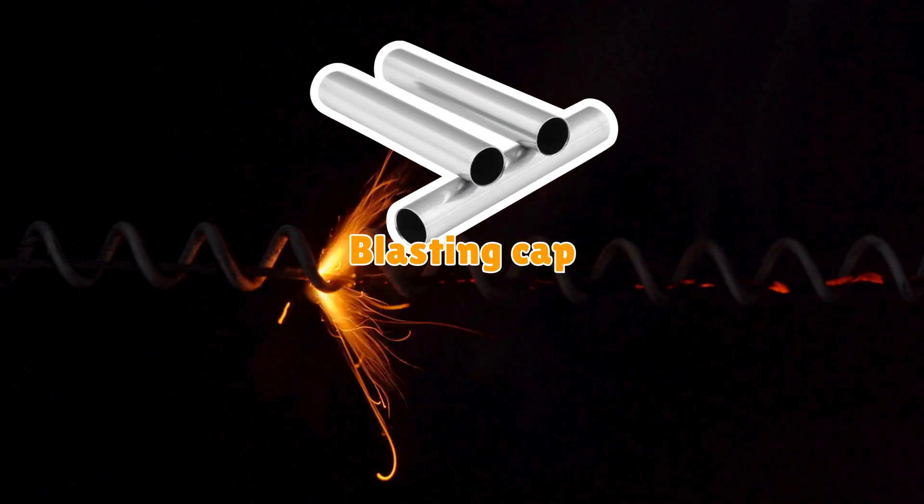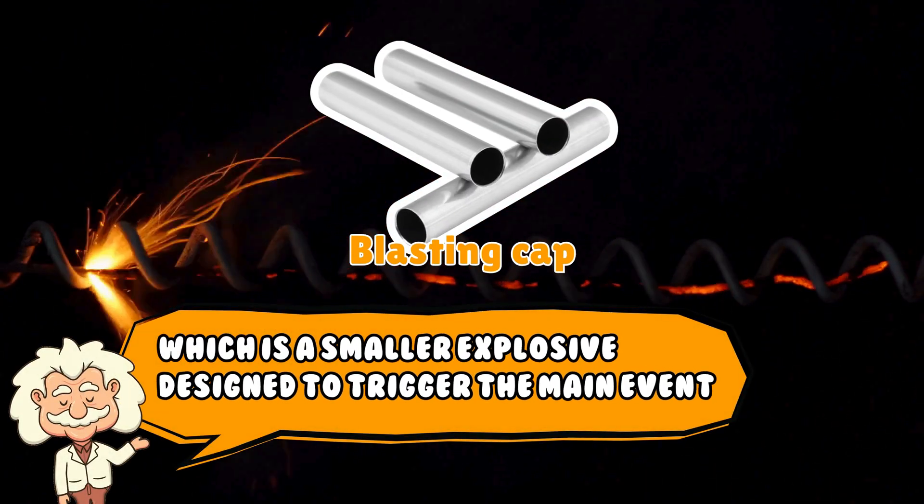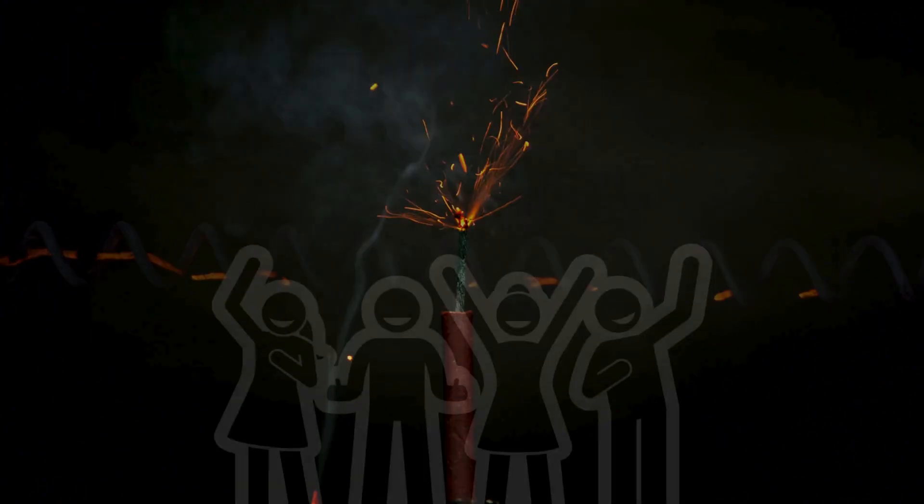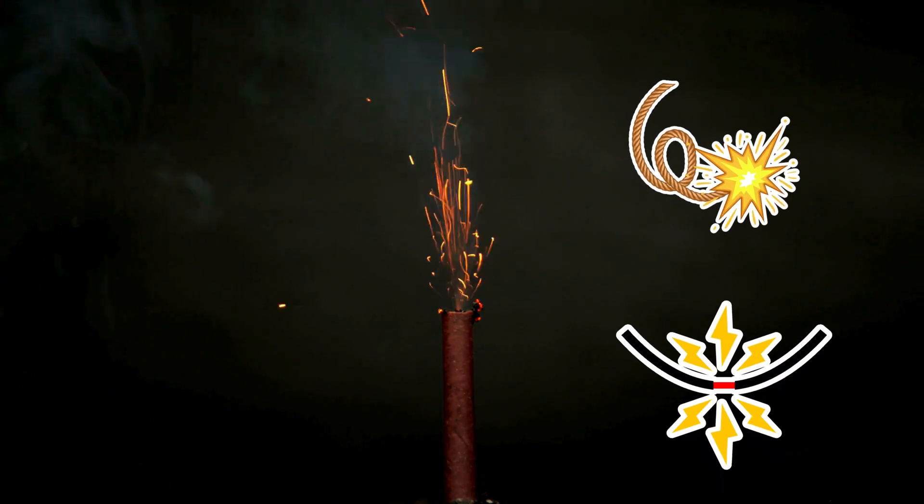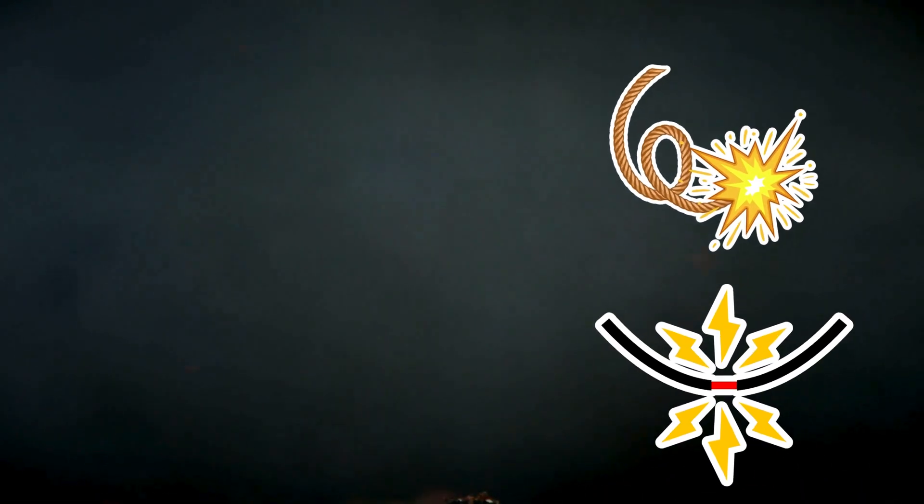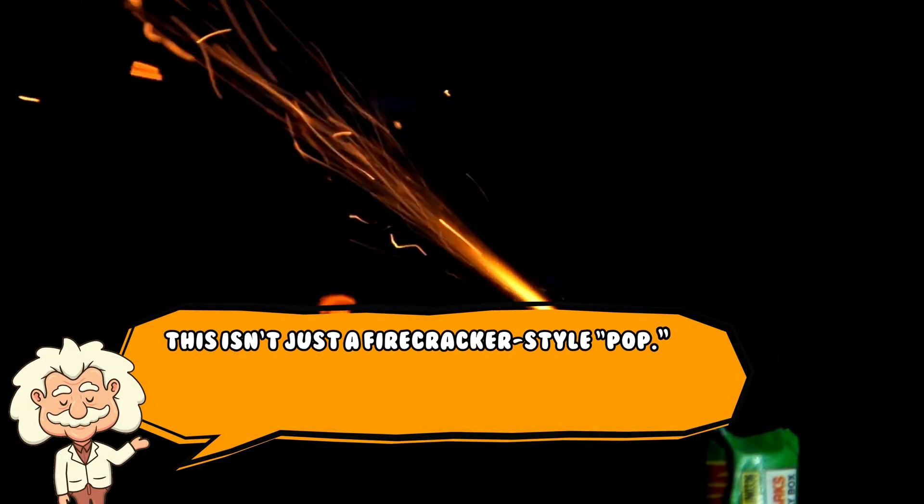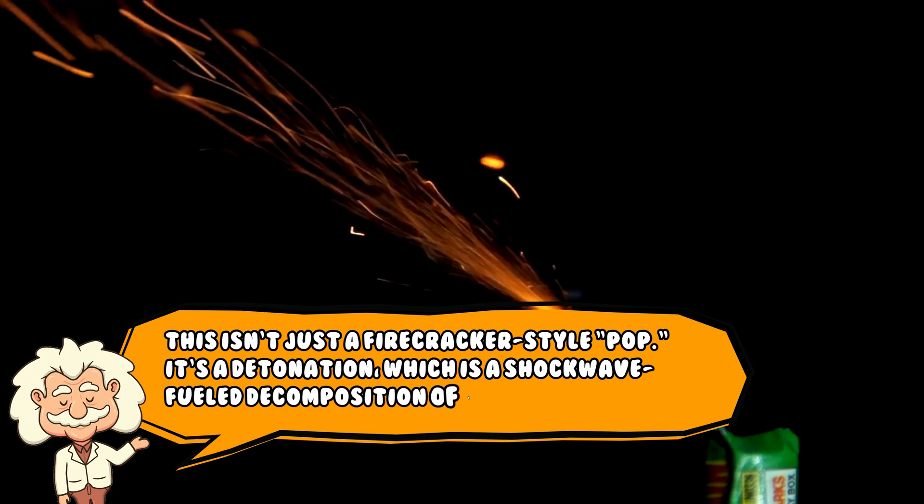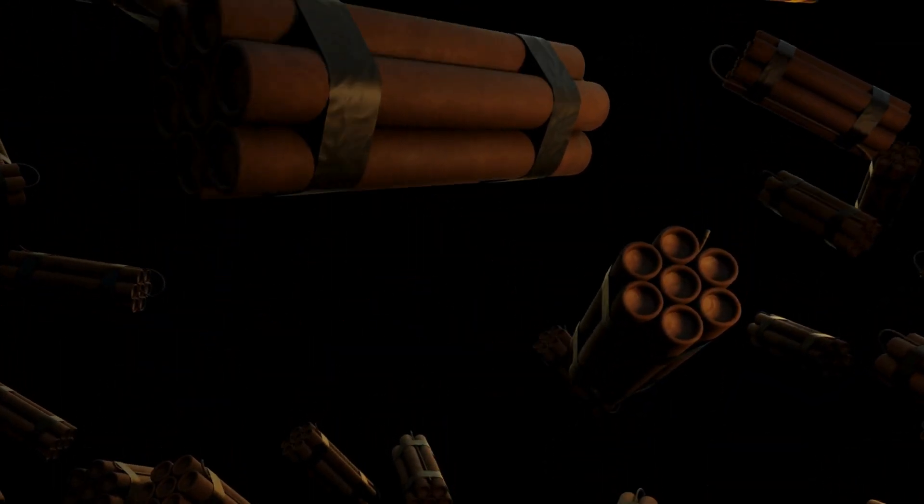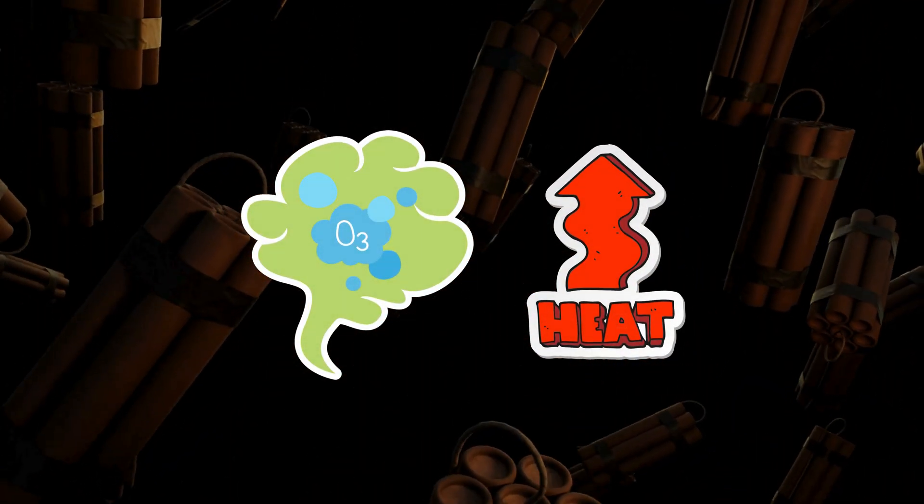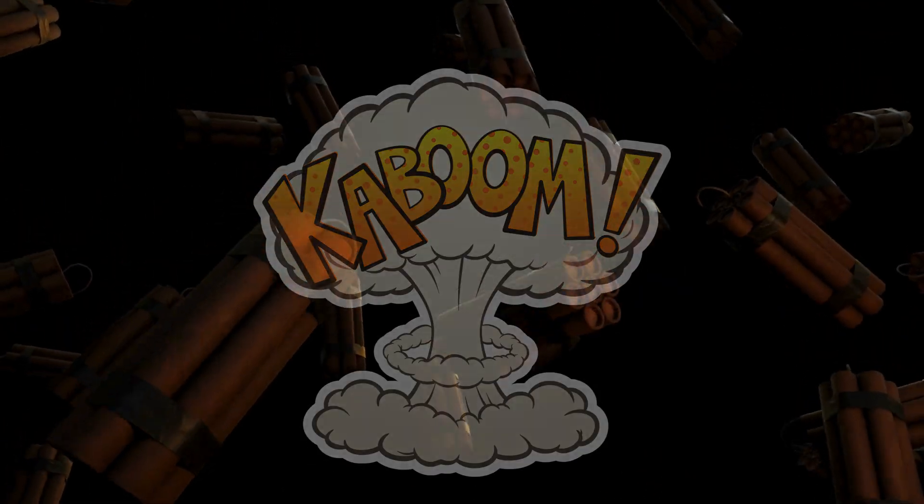Here's where it gets juicy. To set off dynamite, you need a blasting cap, which is a smaller explosive designed to trigger the main event. Think of it like a hype man for your fireworks. The blasting cap is ignited by a fuse or an electric current. And when it goes off, it jolts the nitroglycerin inside the dynamite stick into a violent chemical reaction. This isn't just a firecracker-style pop. It's a detonation, which is a shockwave-fueled decomposition of the nitroglycerin. This releases a ridiculous amount of gas and heat in milliseconds,